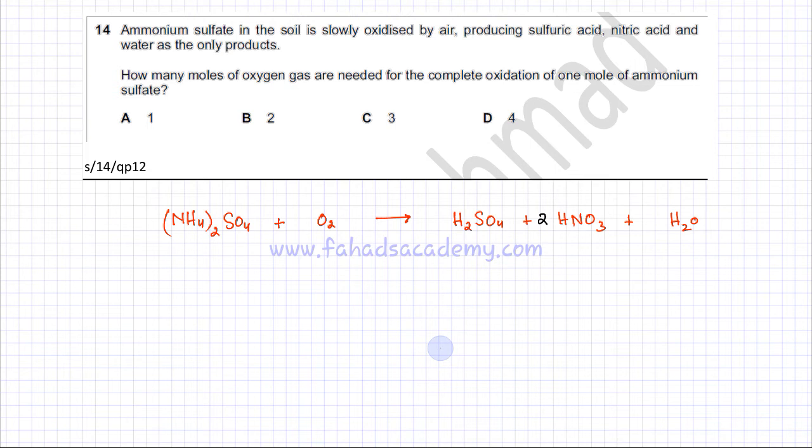Sulfur is already balanced. There's one sulfur here, one sulfur here, so that's already balanced. We can balance hydrogen now. There are a total of eight hydrogens here because there are two ammonium ions.